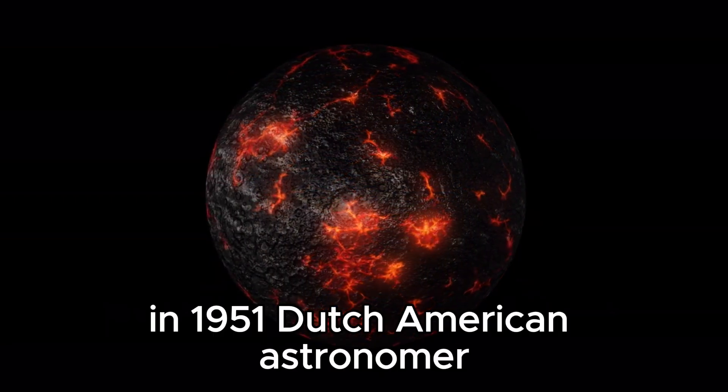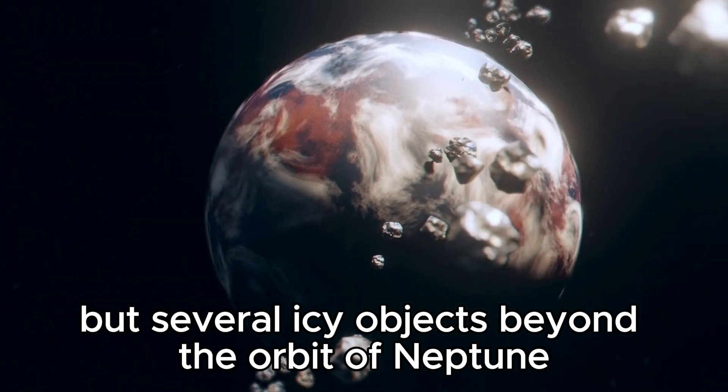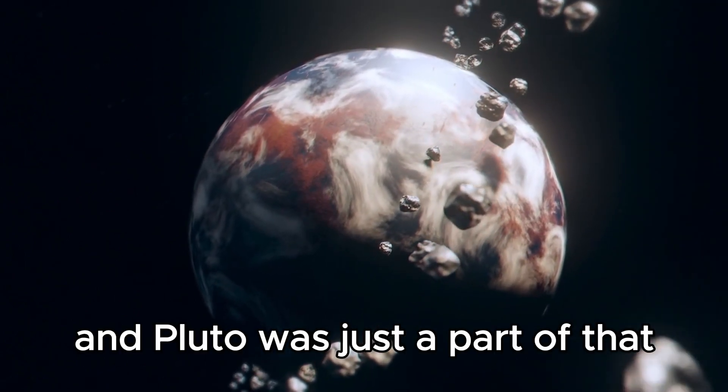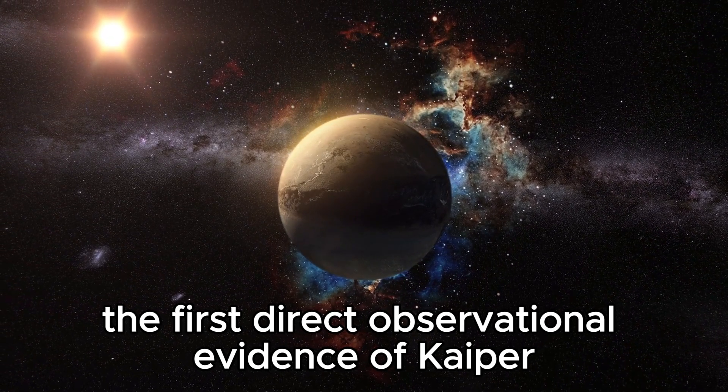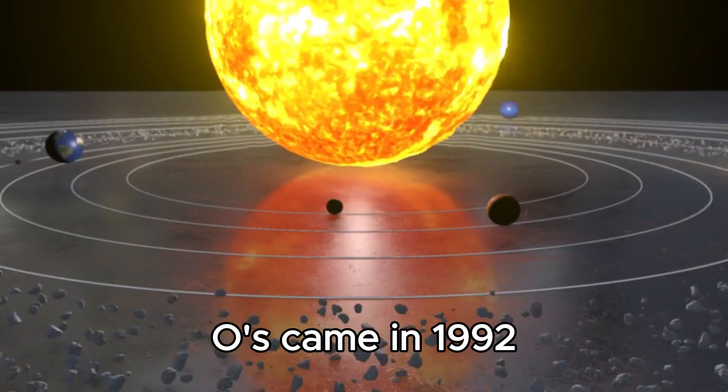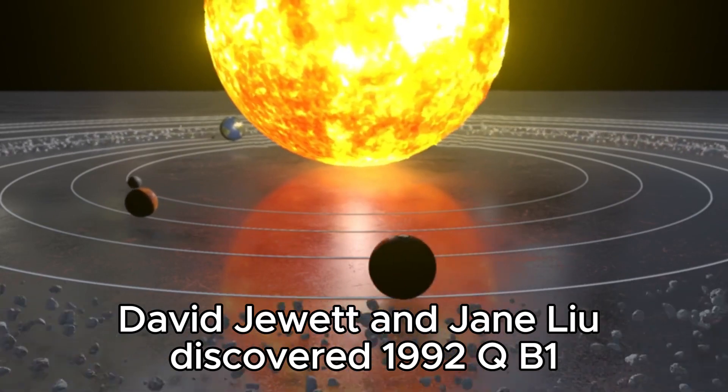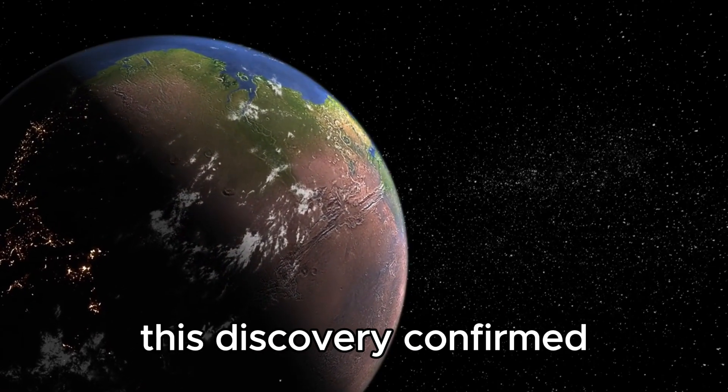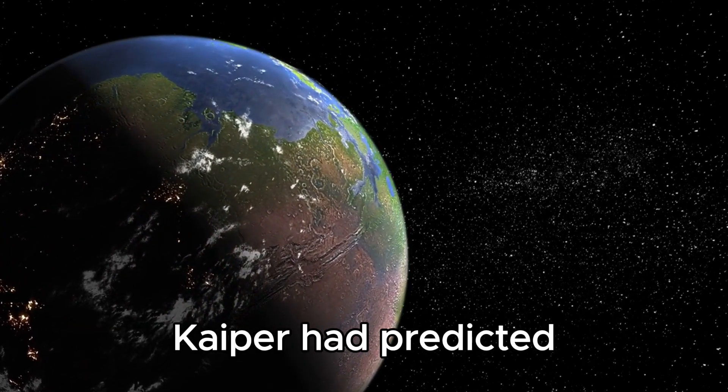In 1951, Dutch-American astronomer Gerard Kuiper predicted that there could be not one but several icy objects beyond the orbit of Neptune, and Pluto was just a part of that larger belt of objects known as the Kuiper belt. The first direct observational evidence of Kuiper belt objects came in 1992, when astronomers David Jewett and Jane Liu discovered 1992 QB1, a small icy body beyond Neptune. This discovery confirmed the existence of a population of objects in the region Kuiper had predicted.